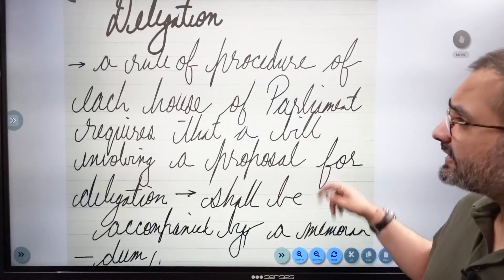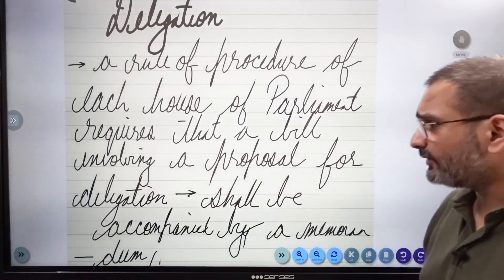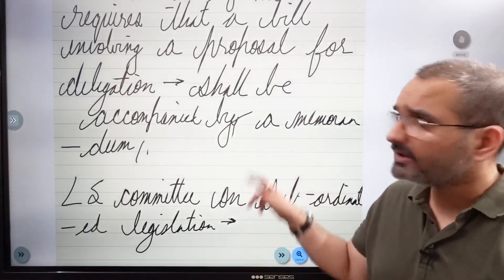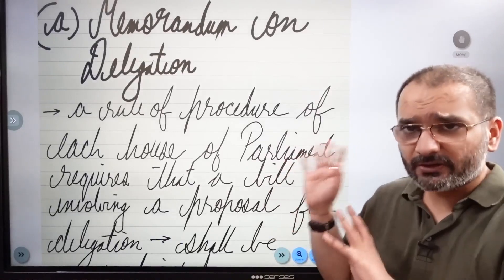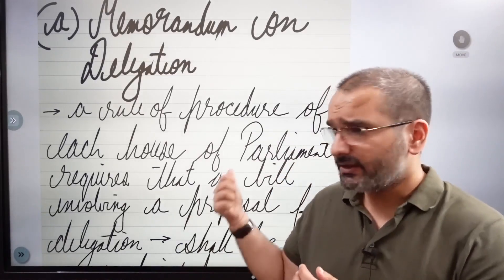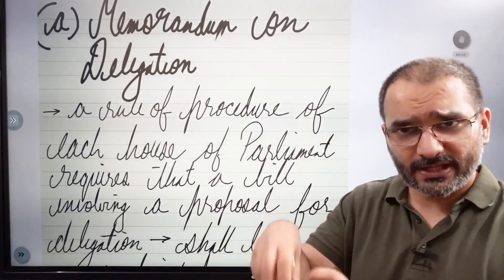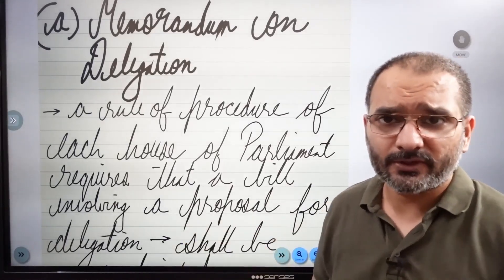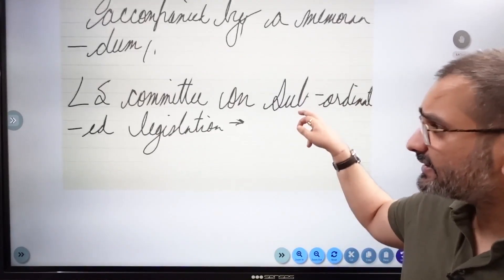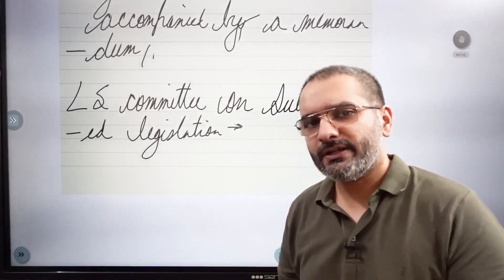Memorandum on delegation: a rule of procedure of each house of parliament requires that a bill involving a proposal for delegation shall be accompanied by a memorandum. This is already a rule of procedure — whenever you want to delegate your power of legislation, the rules you frame always require a memorandum attached to the act, which is then circulated for voting. So the memorandum on delegation always has to exist — this is a kind of legislative control over delegated legislation.